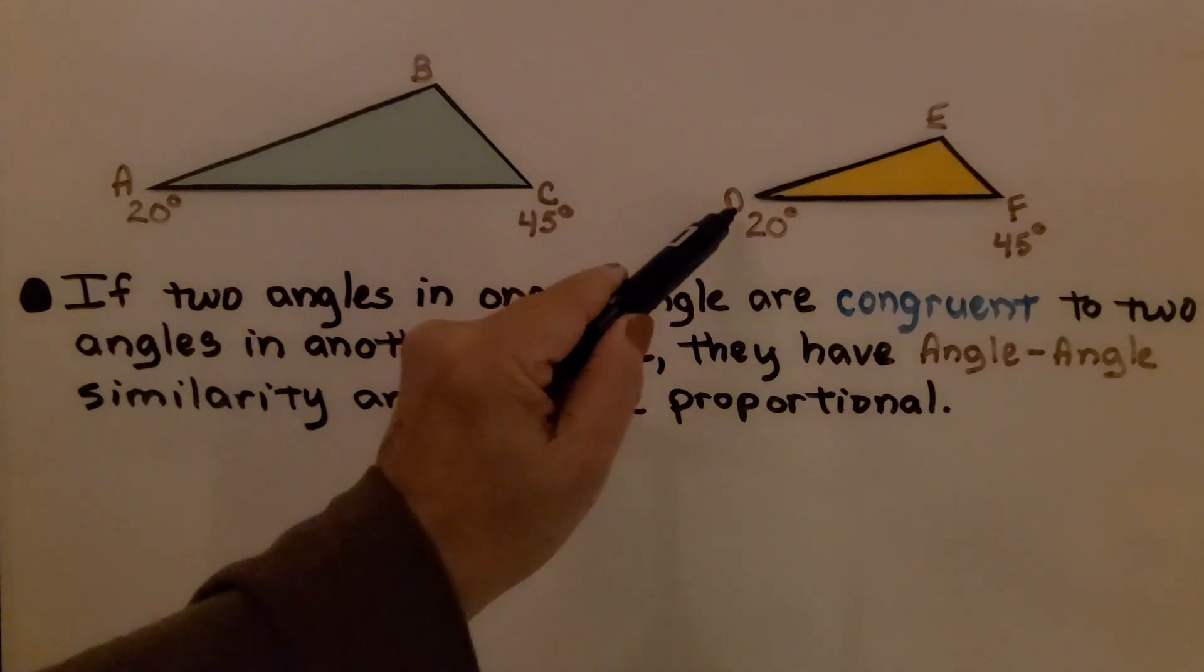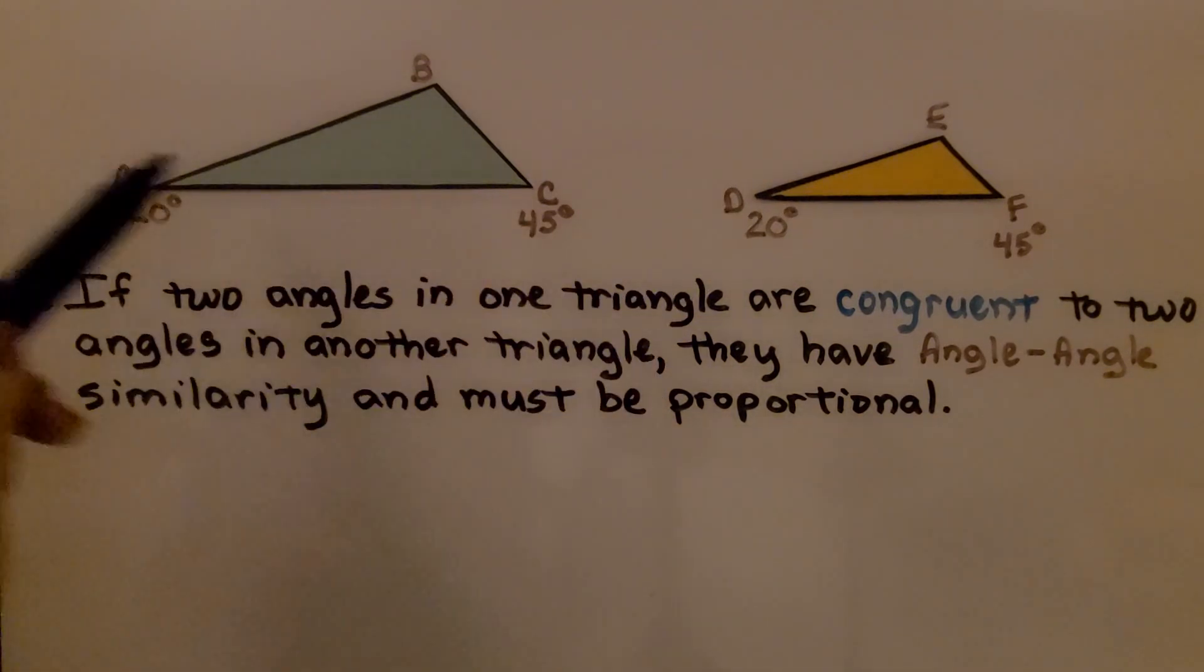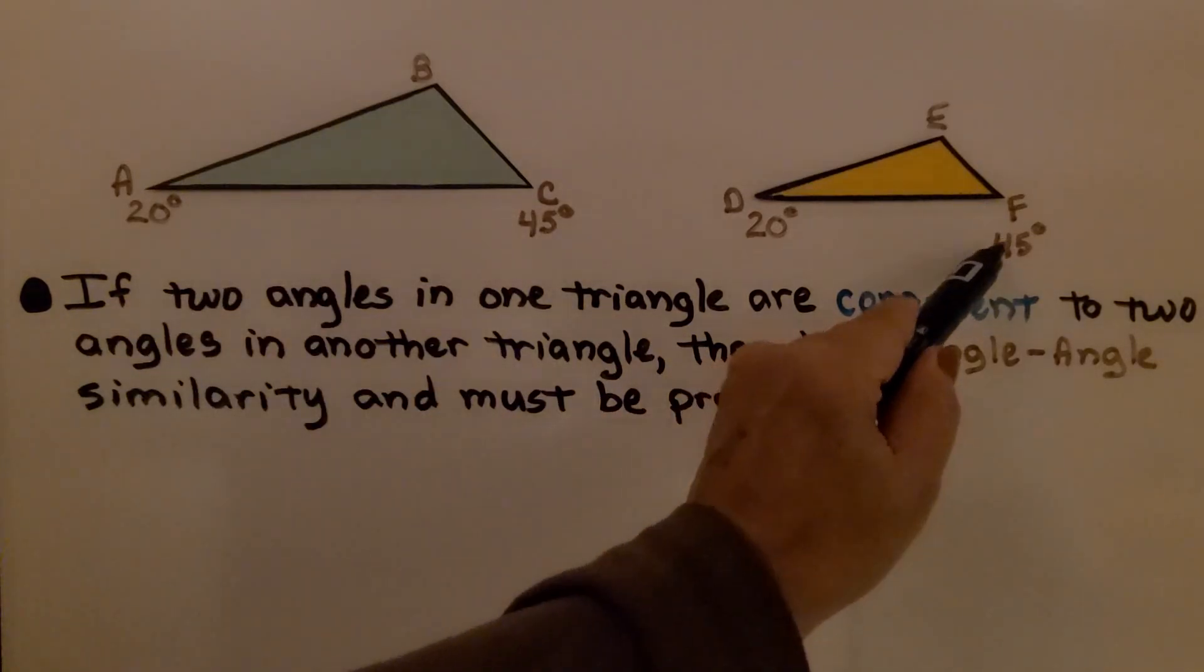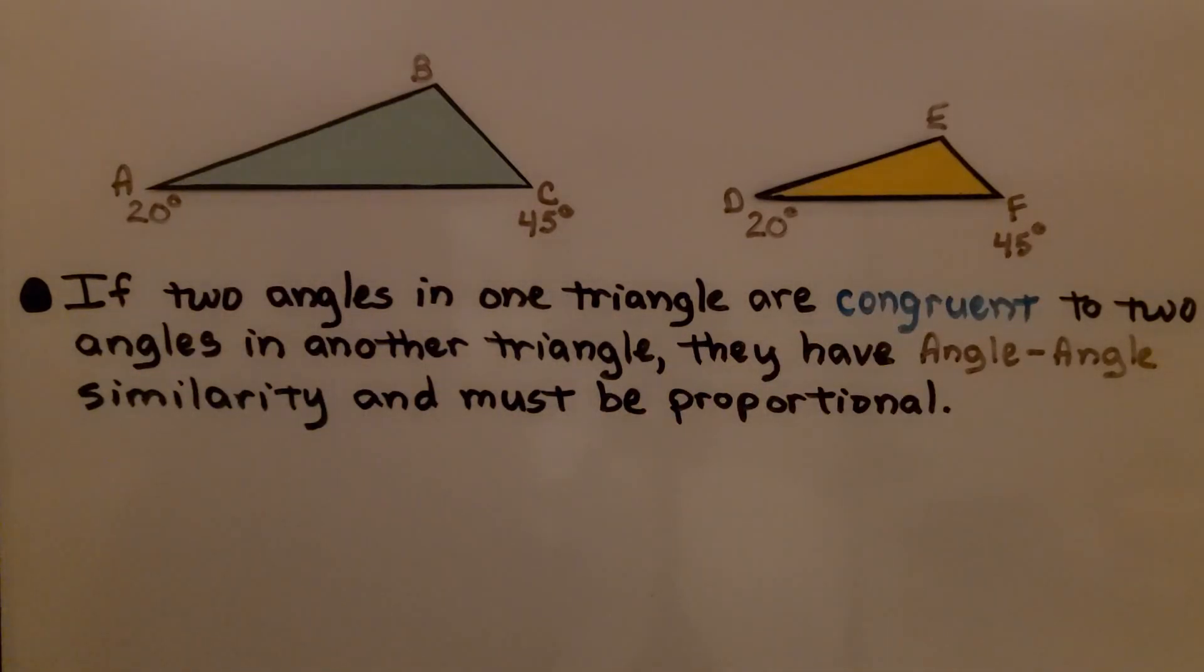For angle D, it's 20 degrees. So that's a pair that are congruent. Then we have angle C that's 45 degrees and angle F that's 45 degrees. We have two pairs of angles that are congruent, so they have angle-angle similarity and must be proportional.